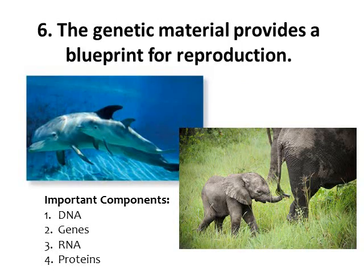The sixth characteristic of life states that we have genetic material — DNA. This genetic material provides the blueprint for reproduction and for organisms to grow and develop. This is a whole unit in this course. We're going to look at DNA, the genes found in DNA, another type of nucleic acid called RNA, and then how DNA and RNA are used to make proteins that give us all our traits and characteristics.